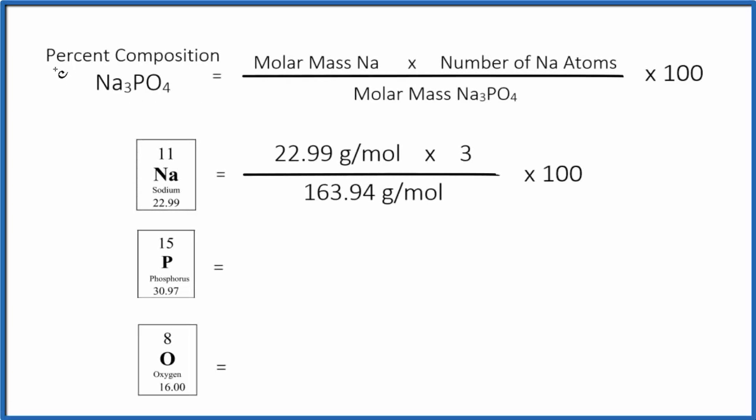Let's take a look at the percent composition by mass of Na3PO4. This is sodium phosphate. We're going to look at this for each element here in sodium phosphate, and we're going to start with the sodium atom, the Na.